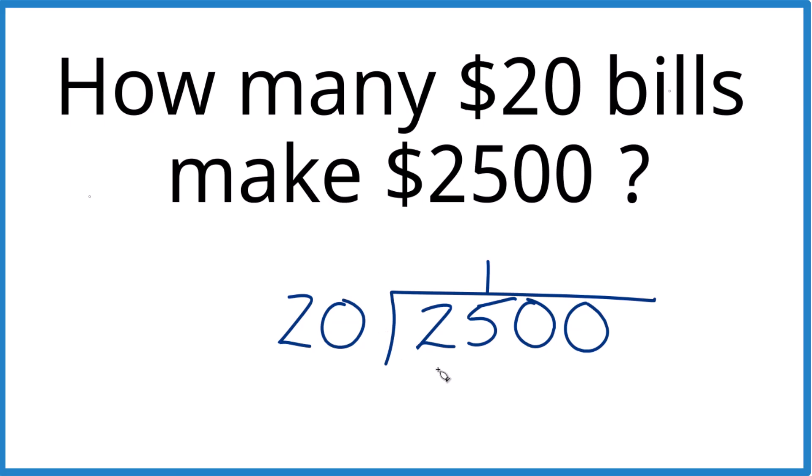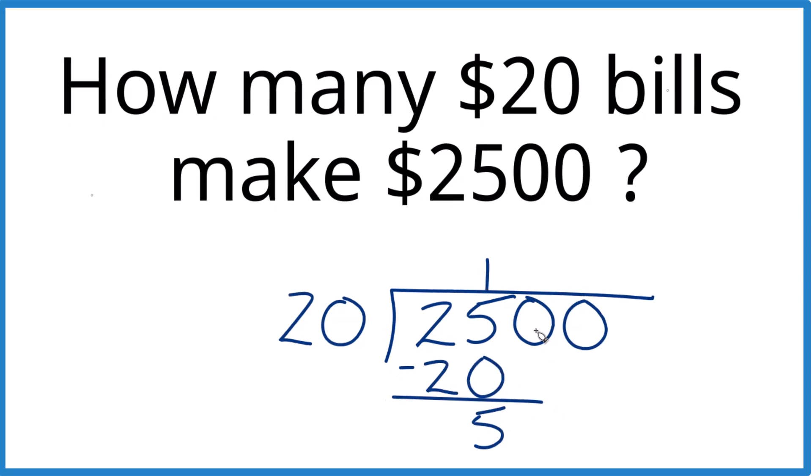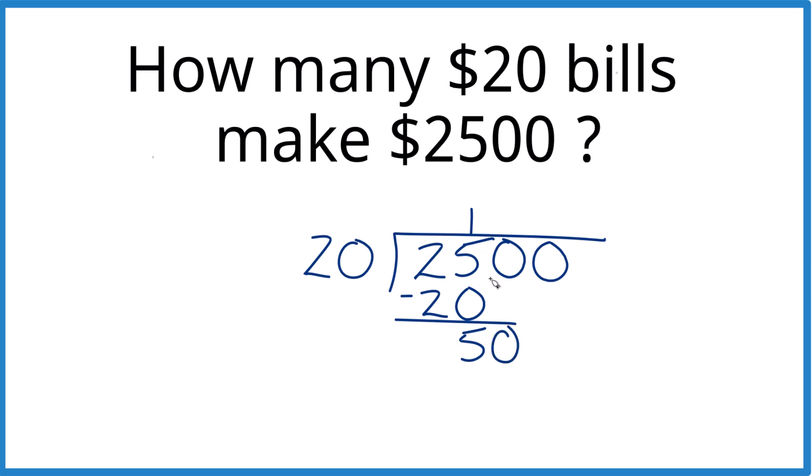So 1 times 20, that's 20. When we subtract, we get 5. Let's just bring this 0 down here. 20 goes into 50. 2 times 20 would be 40. And then we subtract, and we get 100.